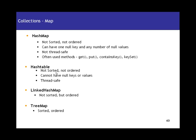Hashtable is not sorted and not ordered. The key difference from HashMap is that Hashtable does not allow any null keys or values — no null items at all. Hashtable is thread-safe, meaning all its methods are synchronized.